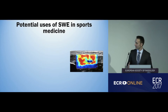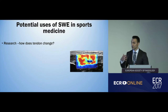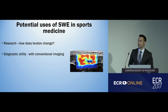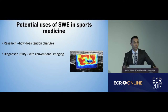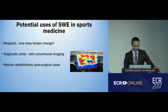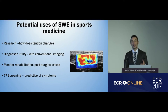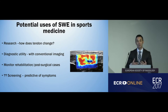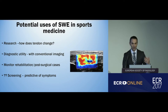The potential uses of shear wave elastography in sports medicine include research — to find out how a tendon changes in response to what we do — diagnostic utility alongside conventional imaging, monitoring rehabilitation and optimising it, optimising post-surgical cases, and potentially screening. For example, if we screen a rugby team at the beginning of the season with shear wave elastography of their tendons, could we predict symptoms moving forward? These are all very exciting hypotheses from a screening perspective.